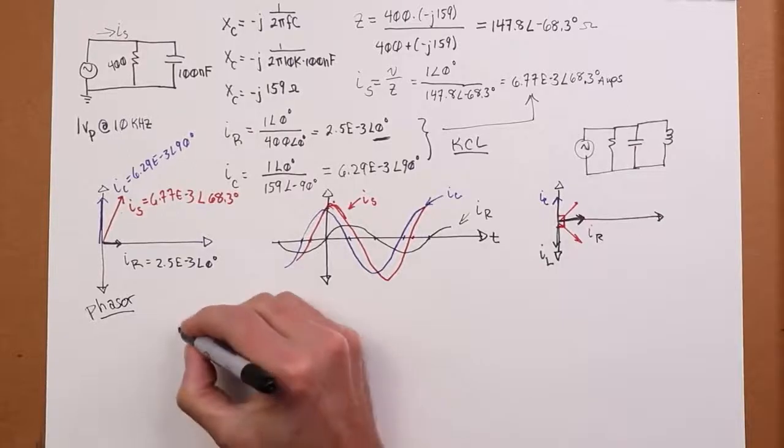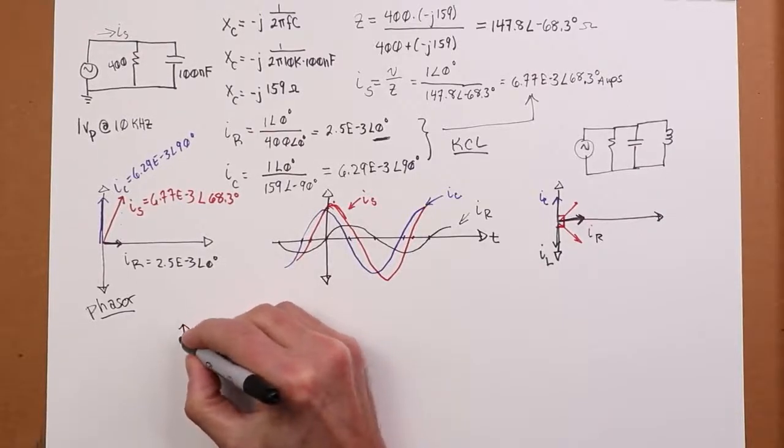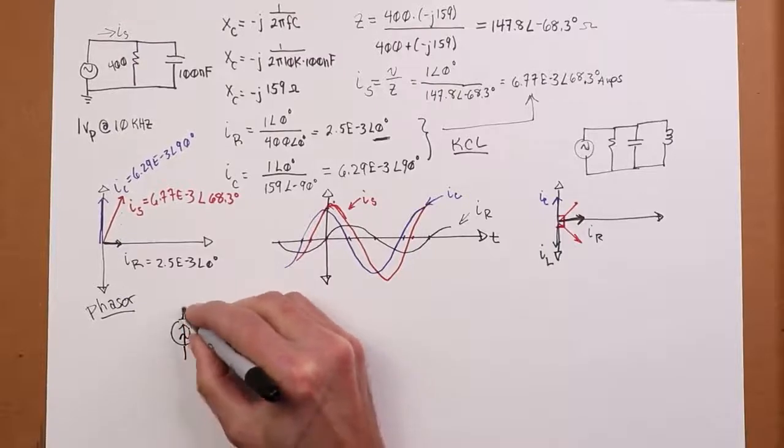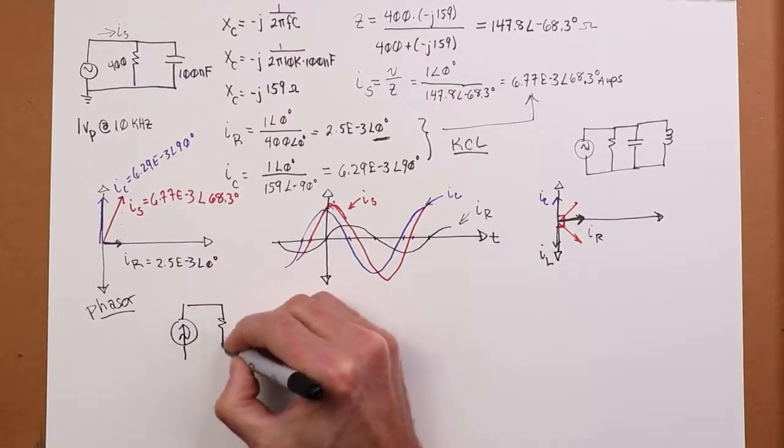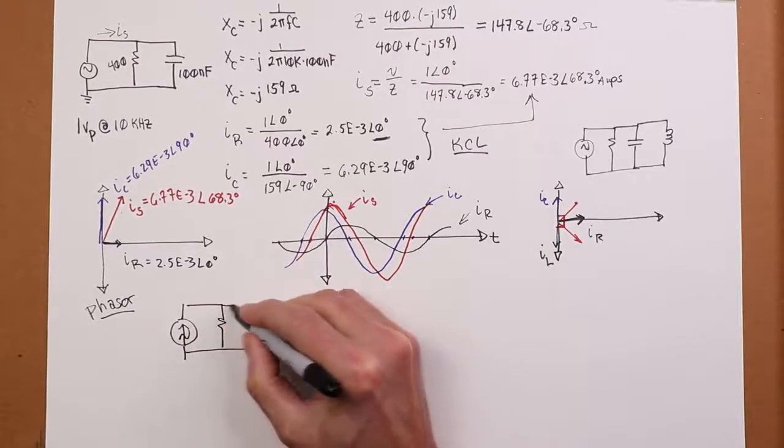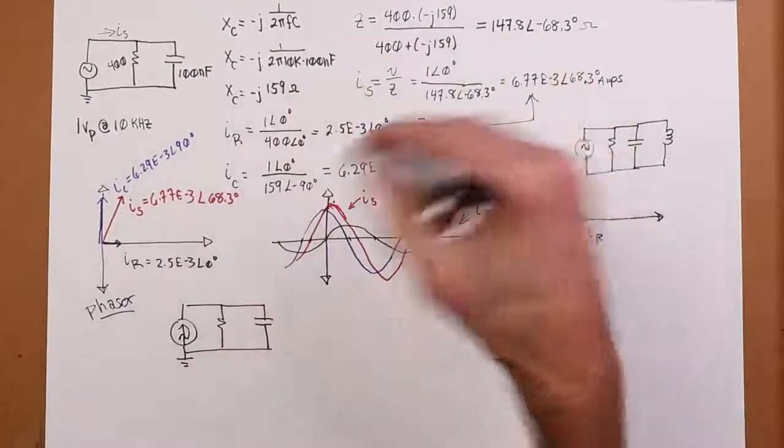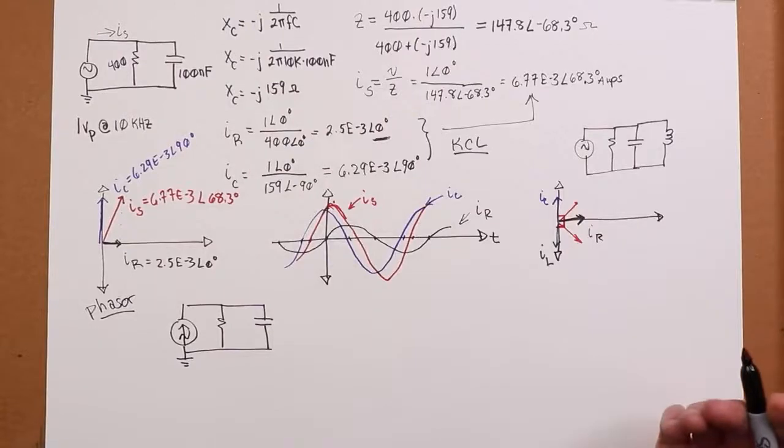What else can we do to sort of mix this up a little bit? Well, what if we had current source? What if we had, instead of a voltage source, what if we have a current source out here? Whether I have two or three or however many components, how does that change? How does our approach change?